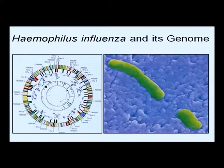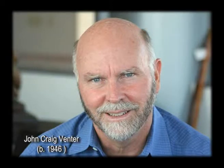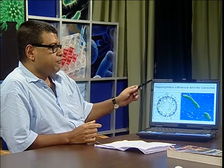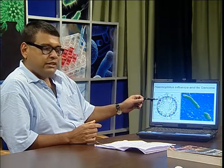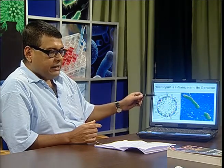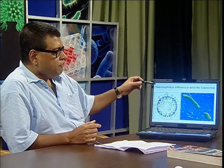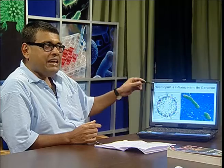This is Haemophilus influenzae, which causes influenza. The genome was mapped by Craig Venter and others in 1995. The Institute for Genomic Research is credited with the first mapping of a bacterial gene, which is Haemophilus influenzae, and thereby they illustrated which genes are functioning and in what way.